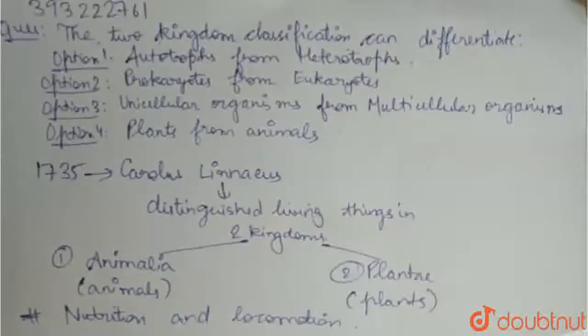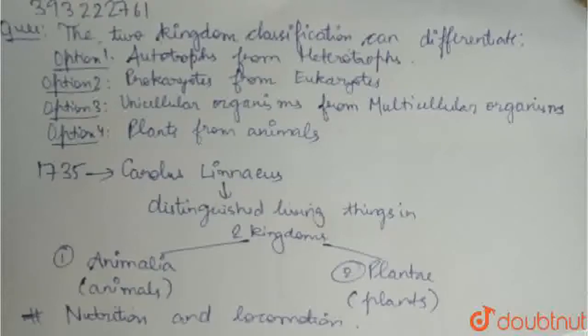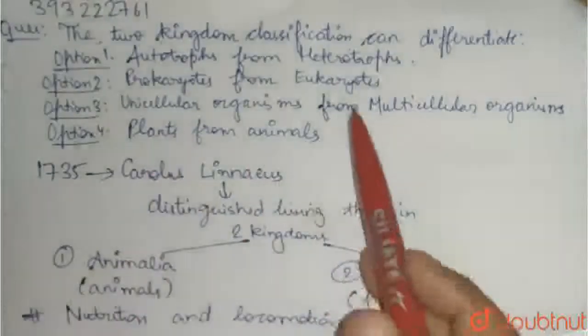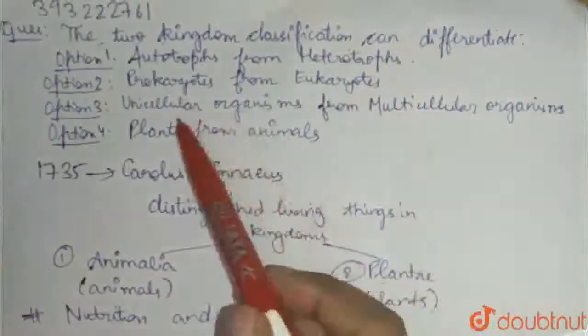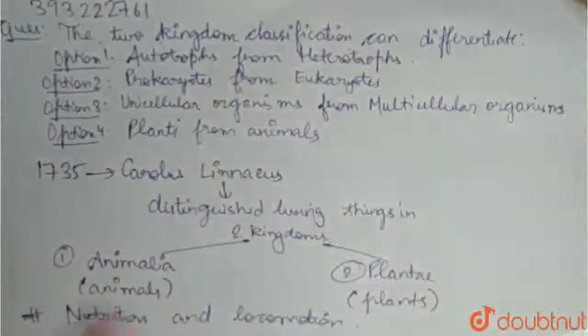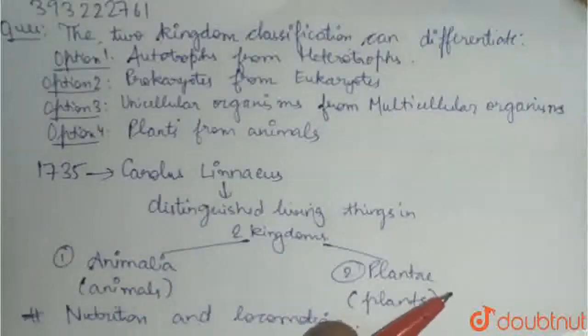But it had a lot of disadvantages — like, prokaryotes and eukaryotes were put in one group, unicellular and multicellular were put in one group, and photosynthetic fungi were not placed in the right place.